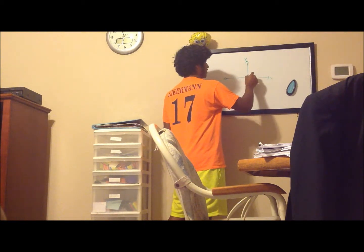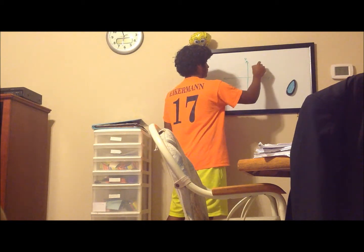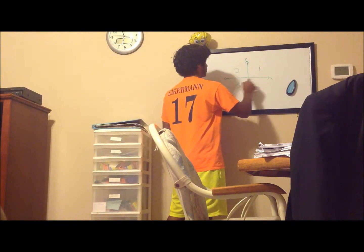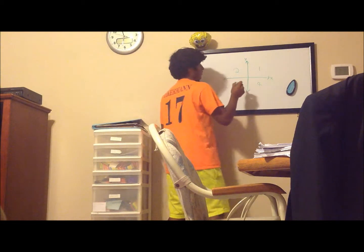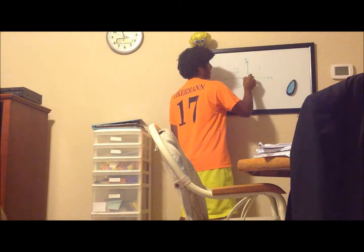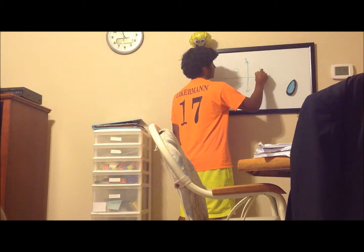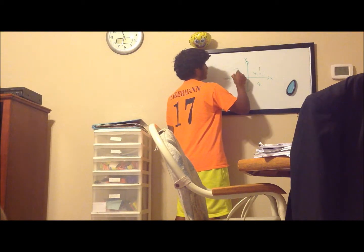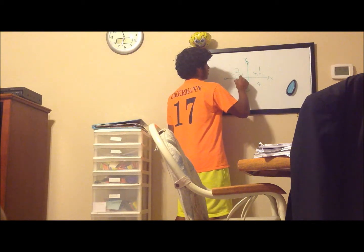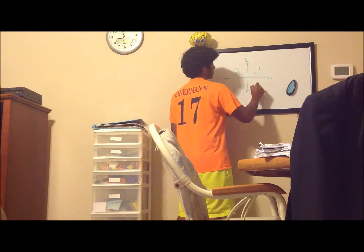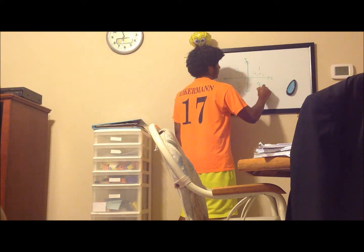It's divided into quadrants: the first quadrant, the second quadrant, the third quadrant, and the fourth quadrant. The first quadrant has a positive X value and a positive Y value, so it's written positive, positive. The second quadrant has a negative X value and a positive Y value, so it's negative, positive. The third quadrant is negative, negative. The fourth quadrant is positive, negative.